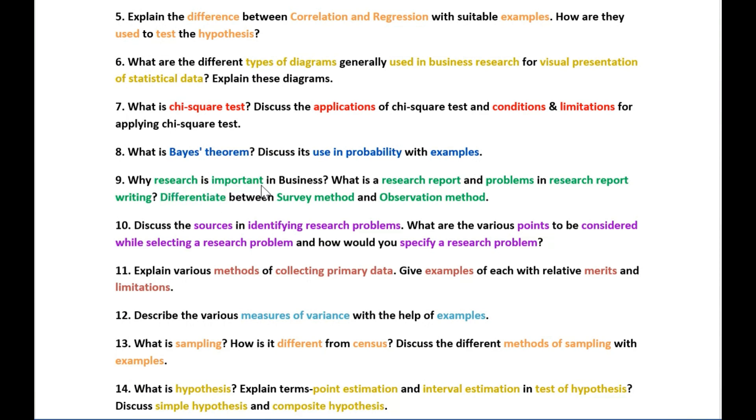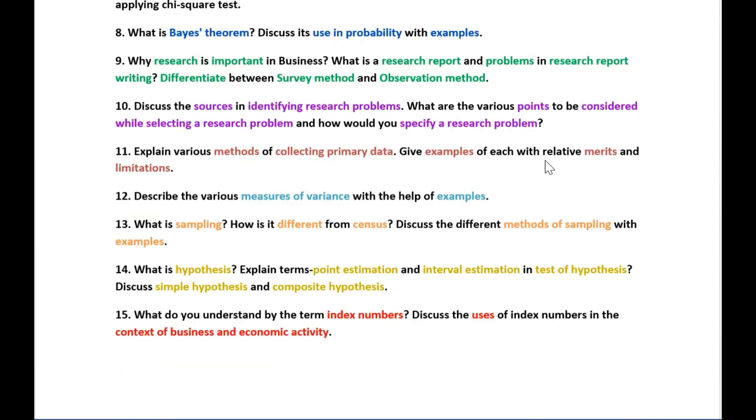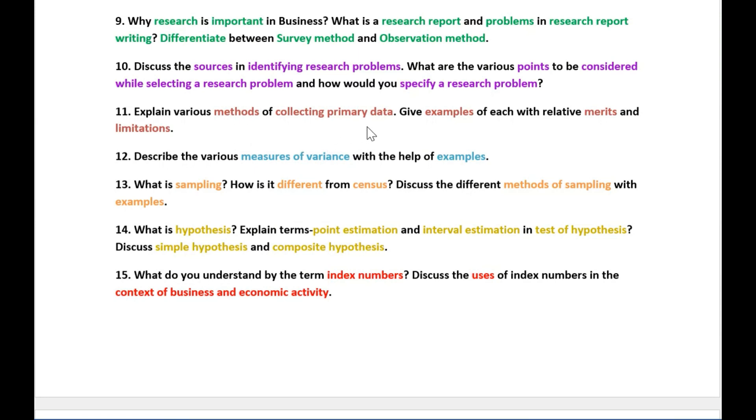The next question is on why research is important in business and what is a research report and problems in research report writing, and differentiate between survey method and observation method. The next question is on sources in identifying research problems and what are the various points to be considered while selecting a research problem and how you specify a research problem. The next question is on methods of collecting primary data and explain it with examples and what are its merits and limitations.